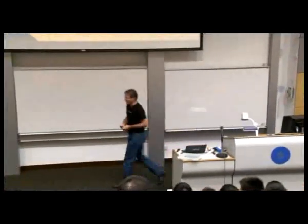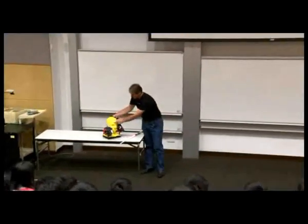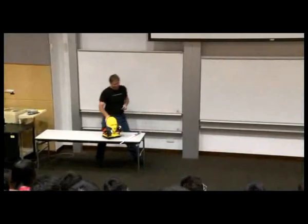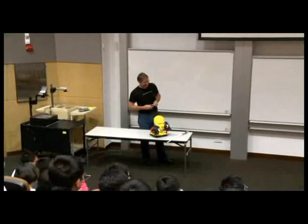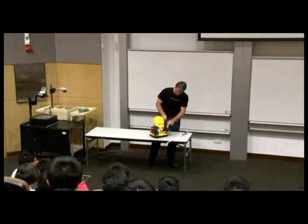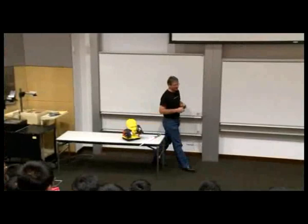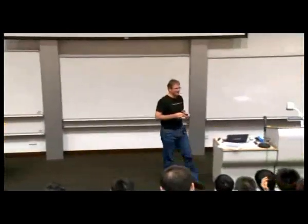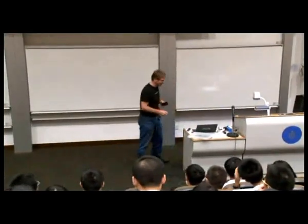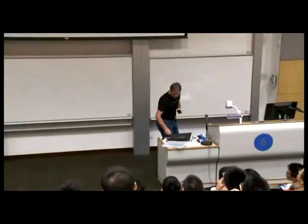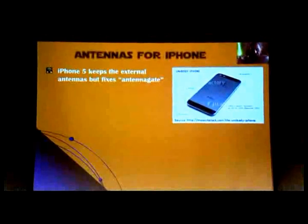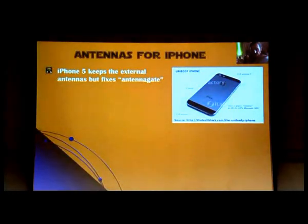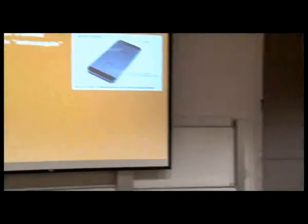When we design antennas, we have to take into account how you hold the phone. We use a head phantom — this is essentially Patrick's head, full of water and sugar, simulating human tissue. We put the mobile phone on this to find out what's happening electromagnetically. Apple may not have done enough of this modeling for the iPhone 4. In the iPhone 5, these problems are solved: one antenna is at the bottom, one is at the top. When you hold it at the bottom, the top one works; when you hold it at the top, the bottom one works.